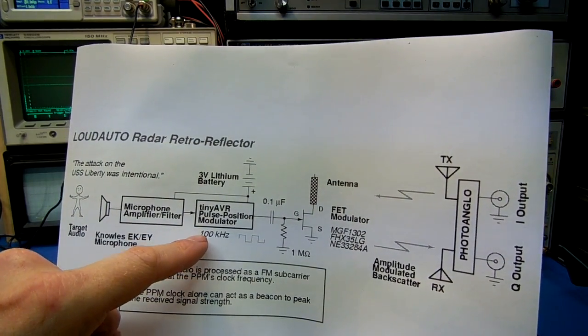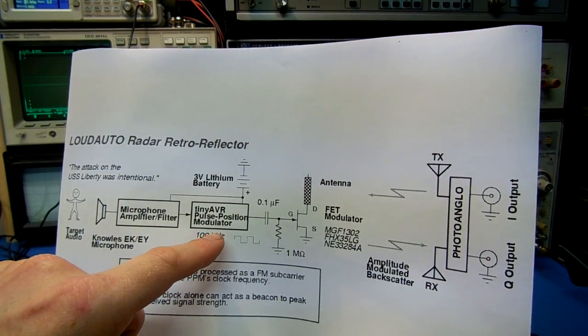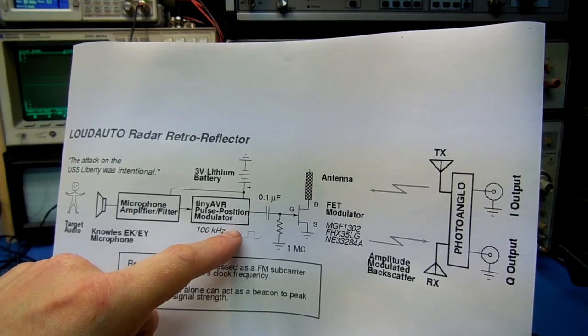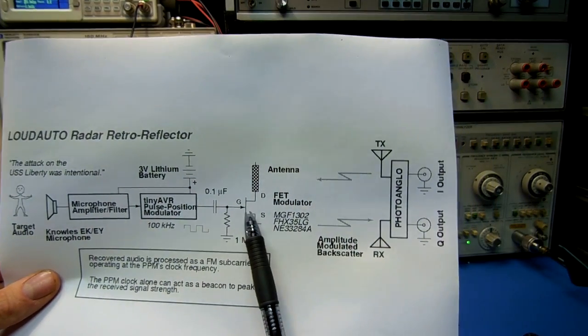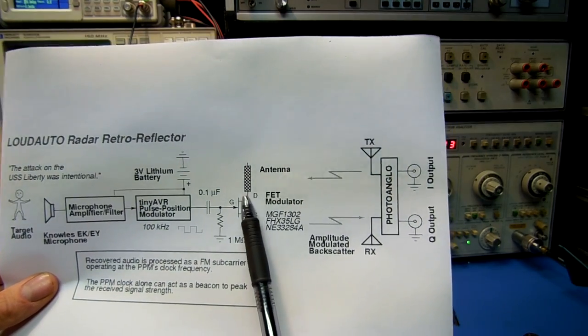In this example, the pulse position modulator is running at 100 kHz. It generates a pulse position modulated pulse train, which is then fed into the gate of the FET device, which has an antenna on the drain.